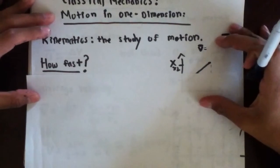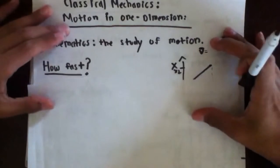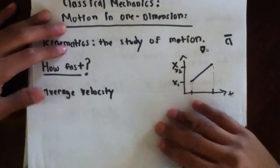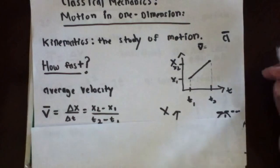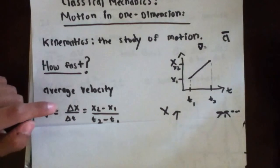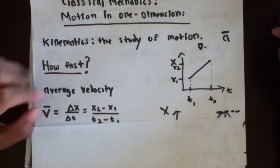And we usually can answer this question using average velocity or instantaneous velocity. Now average velocity, it's pretty intuitive. It's the change in position over the change in time.